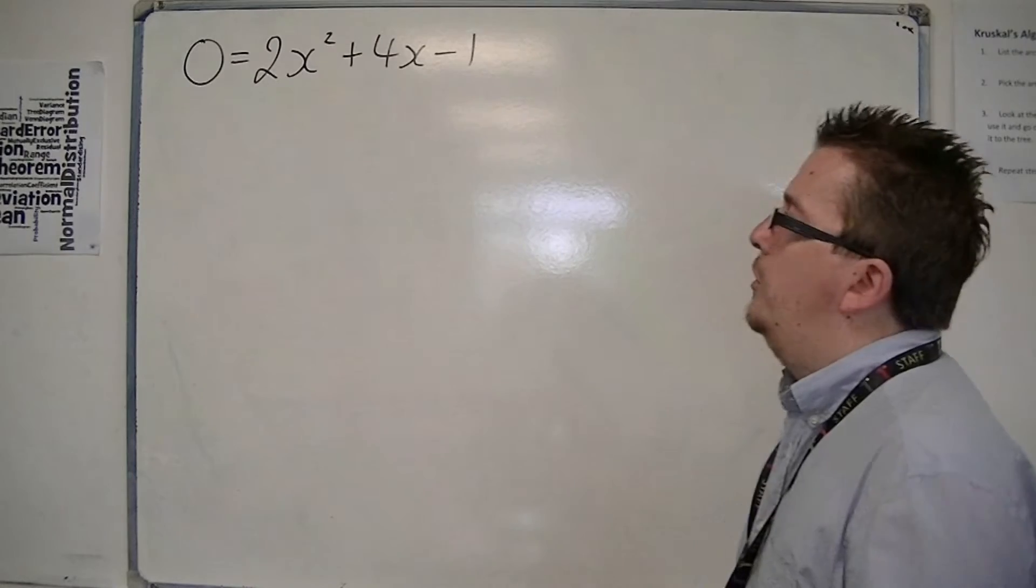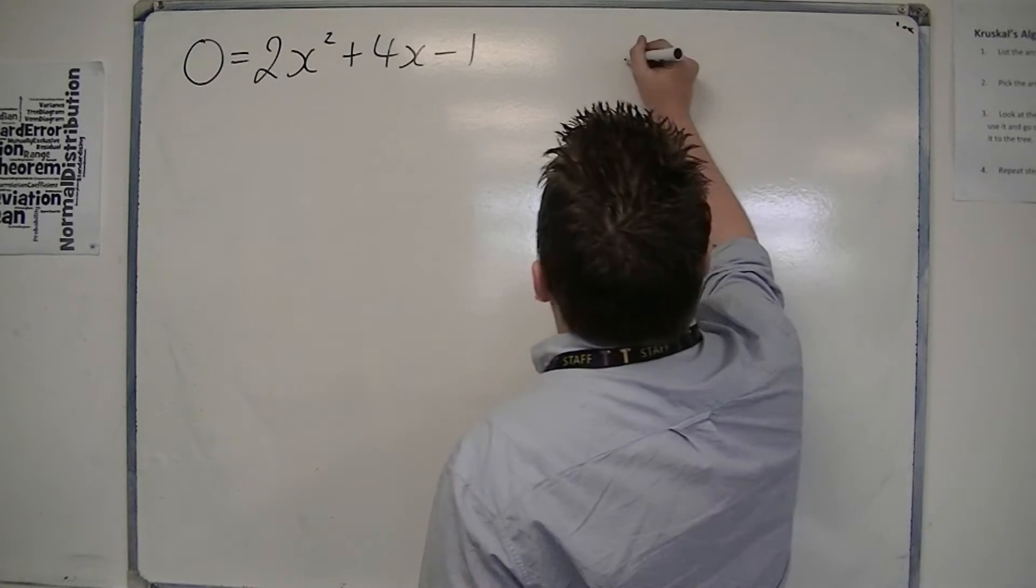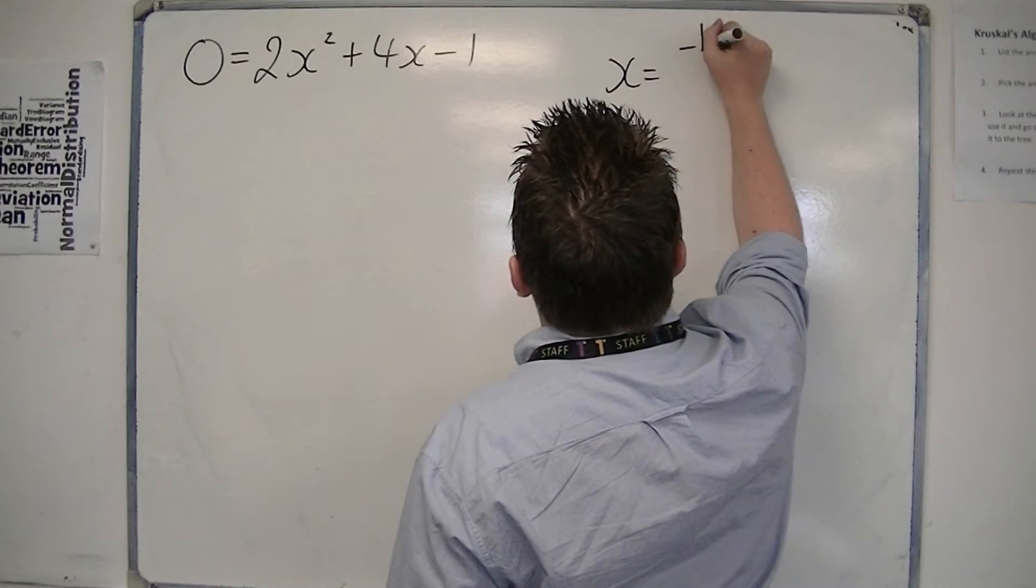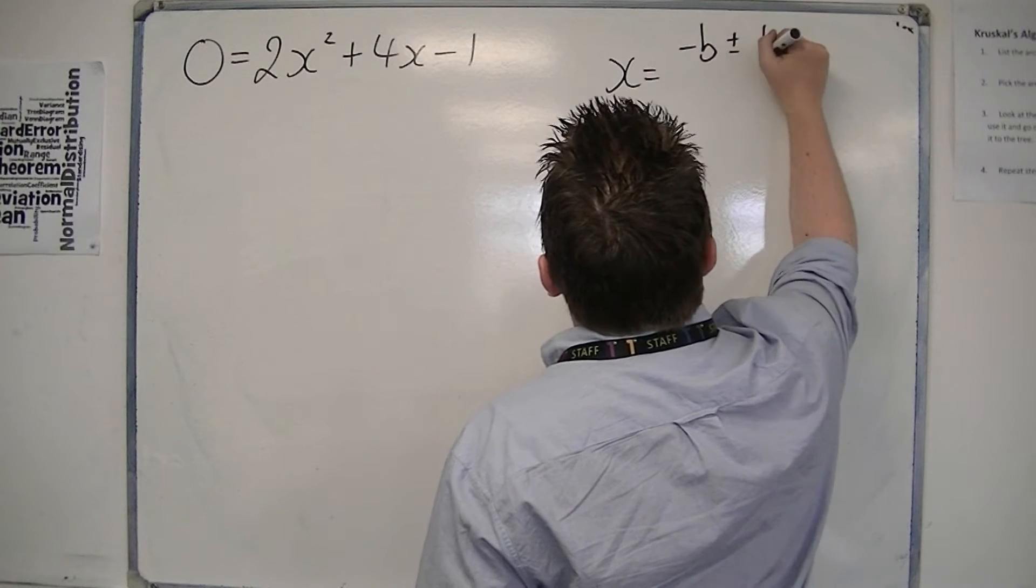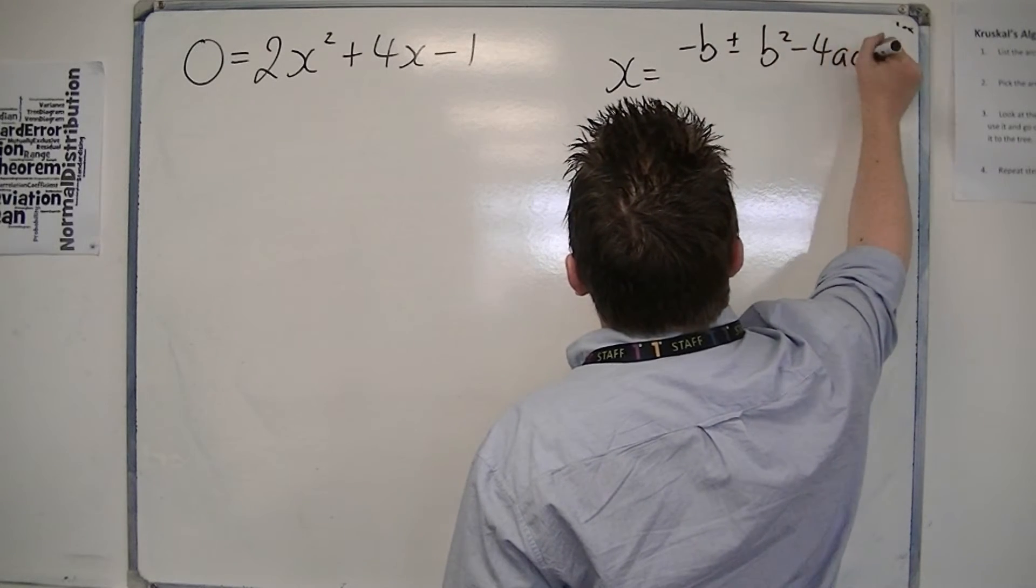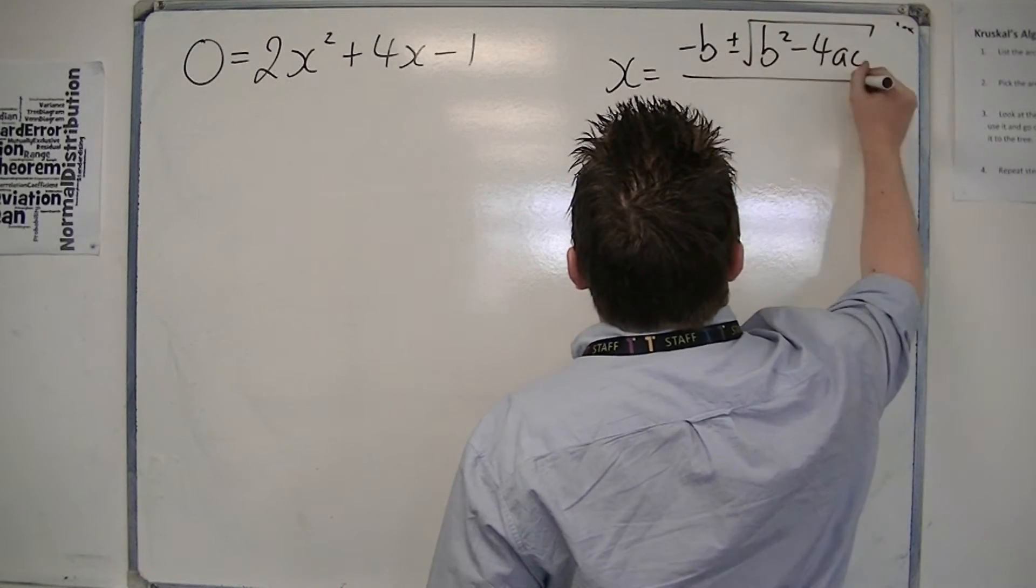So the quadratic formula is x equals minus b plus or minus the square root of b squared minus 4ac all over 2a.